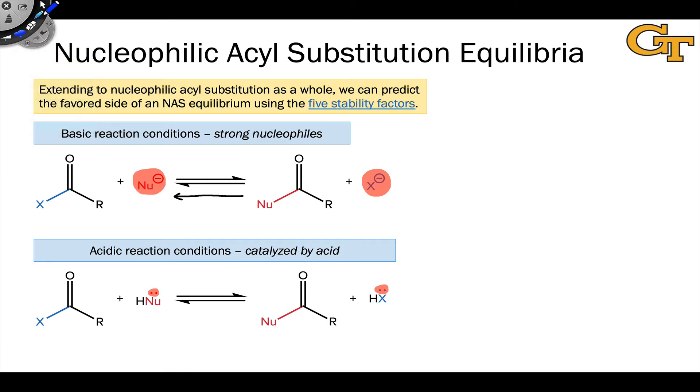So let's say, for example, that using the stability factors and thinking about x-minus versus nu-minus, the conjugate bases of these, we determine that Hx was the weaker nucleophile of the two. We could conclude from this that the reaction would proceed forward spontaneously and that the favored side would be the product side.